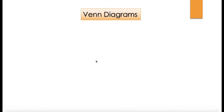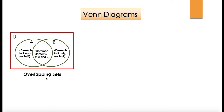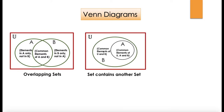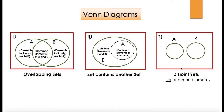When we looked at Venn diagrams in the previous session, we had three different varieties where we had overlapping sets. A and B overlap with each other and this is the common elements area. Here we have A contained within B, and A and B are actually contained within U. A set contains another set, and we had the disjoint sets which have no common elements.